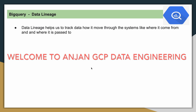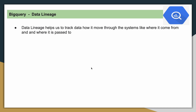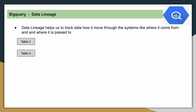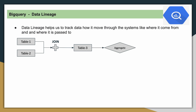First of all, what is data lineage? Data lineage is a feature or concept which helps us track how data is moving through different systems — where it is coming from and where it is going. For example, let's say there is a table 1 and table 2 coming from different systems, and as part of a business requirement we create table 3. We may create this table within the same system or in a different system, such as a data warehouse like BigQuery. We then perform some aggregation on top of table 3 and create table 4.